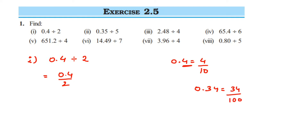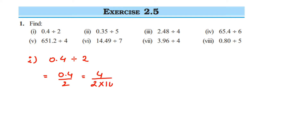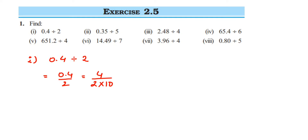Convert to fractional form first, then divide. Removing the decimal gives 4 upon 2 multiplied by 10, because 0.4 equals 4 upon 10, and the 2 from the division is also in the denominator, so they multiply: 2 into 10. Now cancel them — 2 ones are 2, two 2s are 4 — so we get 2 upon 10.